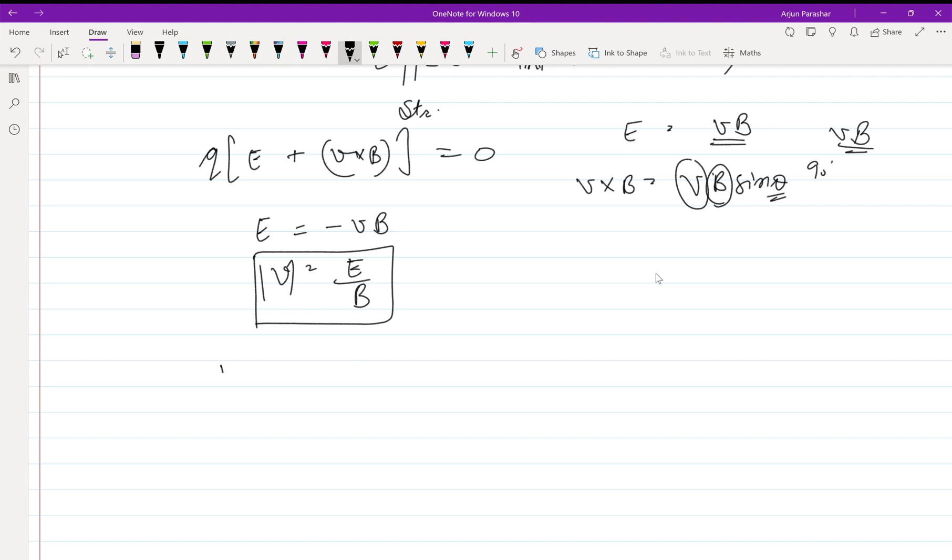So then what he did—he turned off the electric field. The force acting alone becomes q v cross B. Now the beam will also deflect because he has turned off the electric field. So q into B into v is equal to m into a.